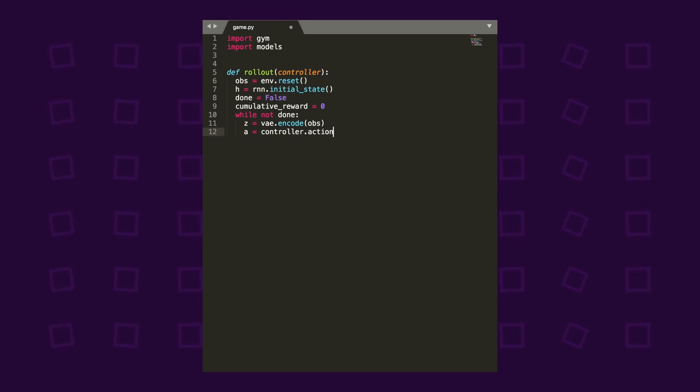We'll use the VAE to encode the observation. We'll then use that output Z as an input to our controller as well as the hidden state of the recurrent network. This will give us an action to take. We'll use the step function GYM provides to execute that action and get back a new observation, a reward if we got one, and a boolean value that represents whether or not the game is over. We can use this reward to update our cumulative reward and use the learned parameters A, Z, and H as input to our recurrent net to create a new hidden state. We repeat this process until the game is over.